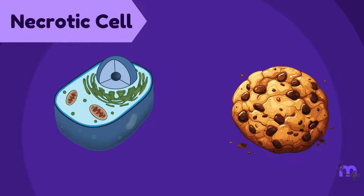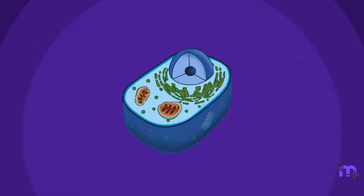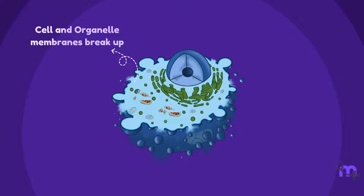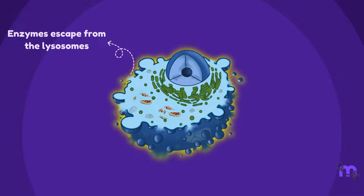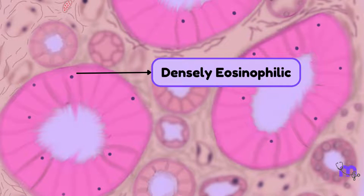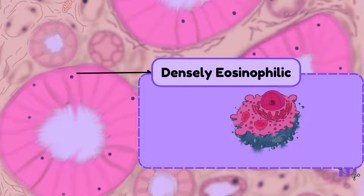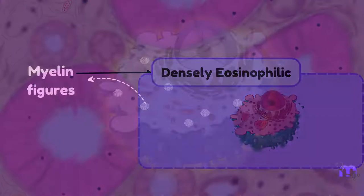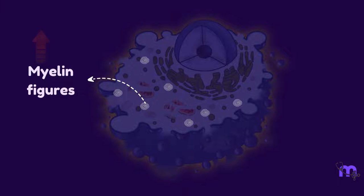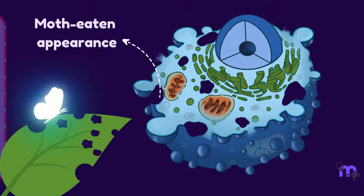A necrotic cell can be likened to a crumbling cookie — every part of it starts breaking into tiny pieces. Following a damaging stimulus, the cell and organelle membranes break up. Enzymes escape from the lysosomes and start digesting the cell. The cytoplasm initially turns dense eosinophilic as the denatured protein binds strongly to eosin and basophilic RNA is lost. Myelin figures derived from the membrane phospholipids increase in number. Soon, the cytoplasm appears moth-eaten.